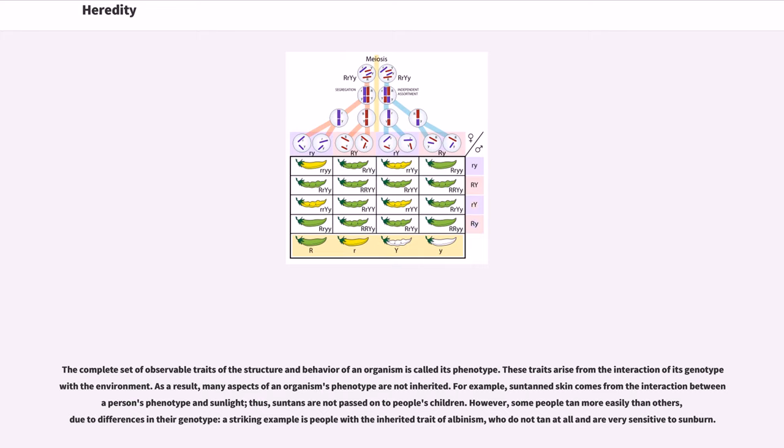As a result, many aspects of an organism's phenotype are not inherited. For example, suntanned skin comes from the interaction between a person's phenotype and sunlight. Thus, suntans are not passed on to people's children. However, some people tan more easily than others due to differences in their genotype. A striking example is people with the inherited trait of albinism, who do not tan at all and are very sensitive to sunburn.